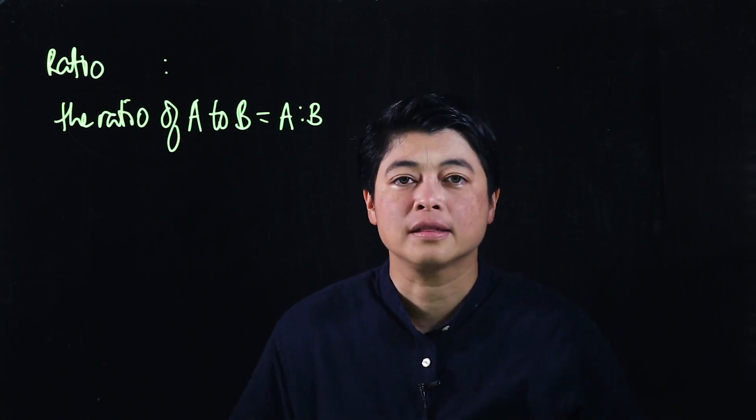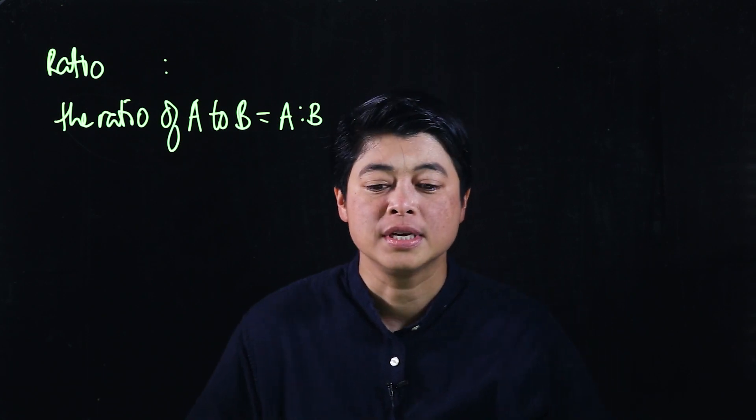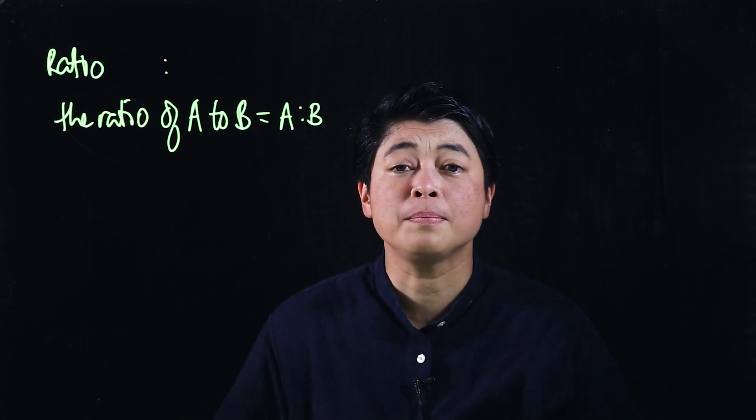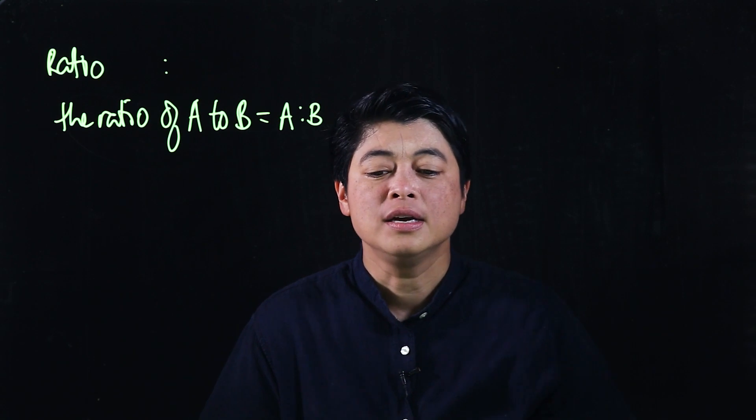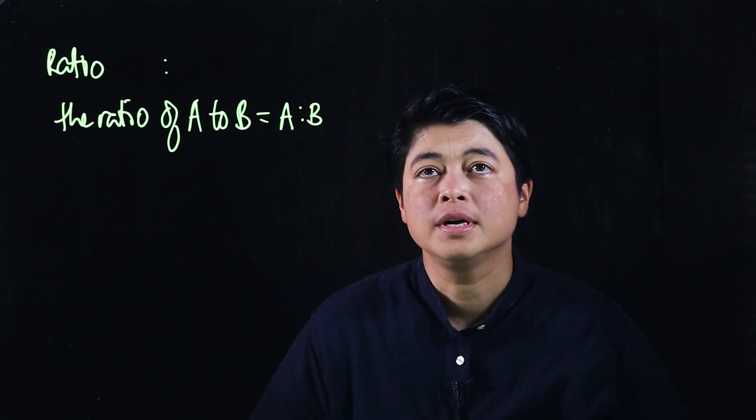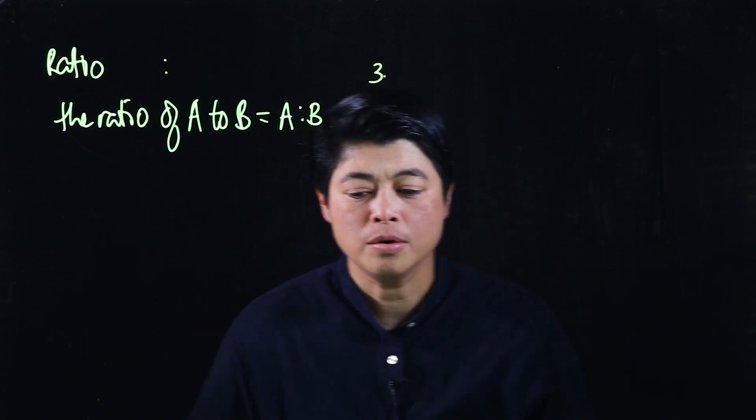We start with simple ratios. As the lessons progress, we'll get into more complicated ratios. Starting with pages 121 to 122, we'll take two problems.